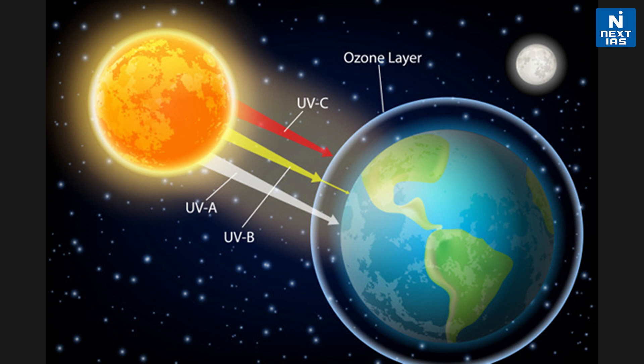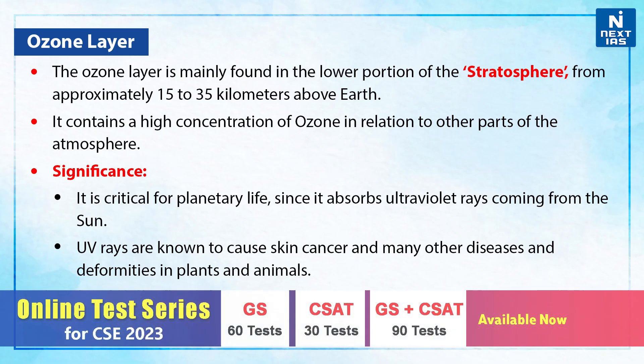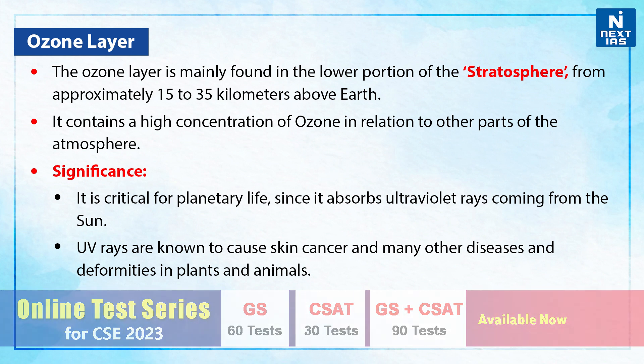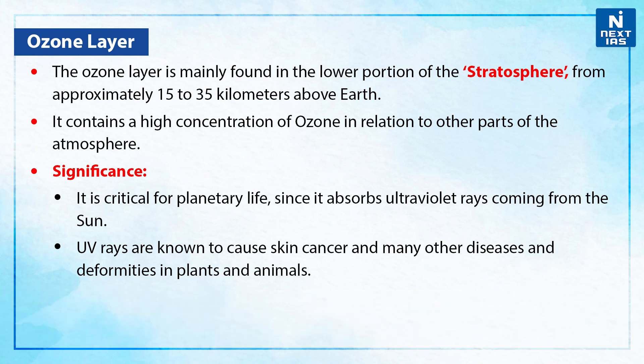About the ozone layer: the ozone layer is mainly found in the lower portion of the stratosphere, from approximately 15 to 35 kilometers above Earth. It contains a high concentration of ozone in relation to other parts of the atmosphere.